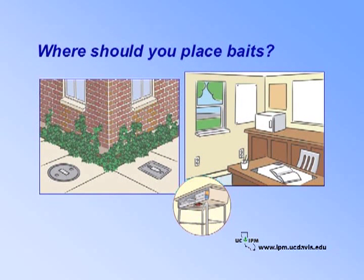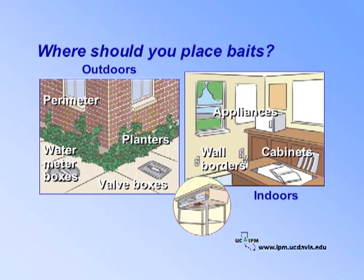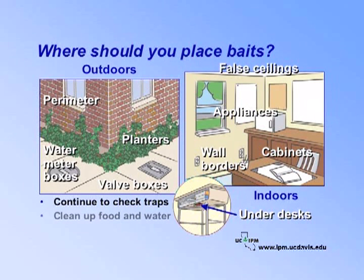Baits do not attract cockroaches, so you'll need to identify your species and place the baits where cockroaches can find them. For outdoor species, bait around the perimeter, in valve boxes, water meter boxes, and around planters. For indoor species, place baits under appliances, along wall borders, in cabinets, and even in false ceilings. In infested classrooms, tape bait stations under desks. Continue to check traps and be sure to keep cleaning up food and water sources and sealing entryways into buildings. If you don't see a reduction within a week, you need to try something else.